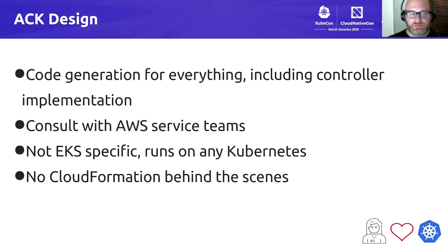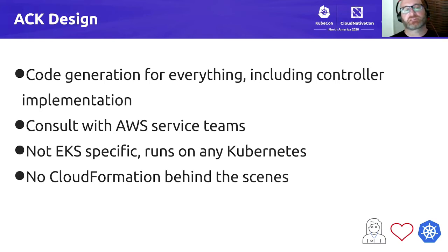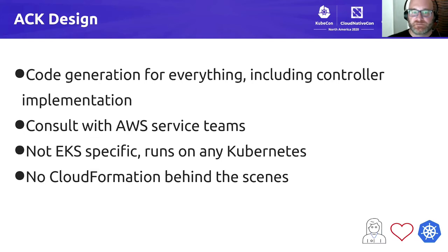It's important to point out that ACK service controllers can be installed on any Kubernetes cluster — there's nothing about ACK that is specific to EKS. You can run an ACK service controller on a GKE instance, on-prem, or a kops cluster running on EC2. Additionally, we are building ACK service controllers by working hand in hand with individual AWS service teams, like ElastiCache or API Gateway, developing custom code for each ACK service controller along with end-to-end tests that verify the service controller is calling their API in a behaviorally and semantically correct fashion.